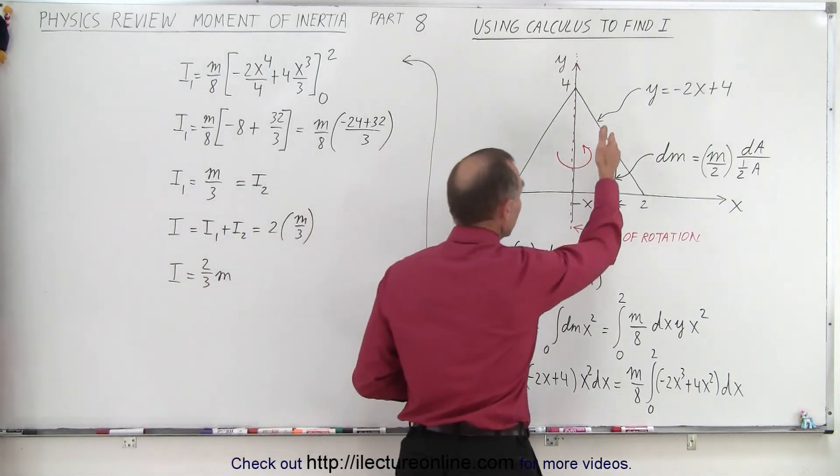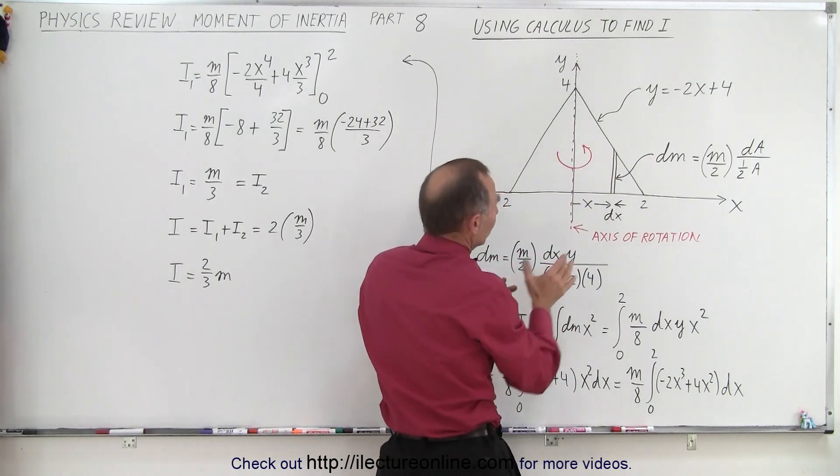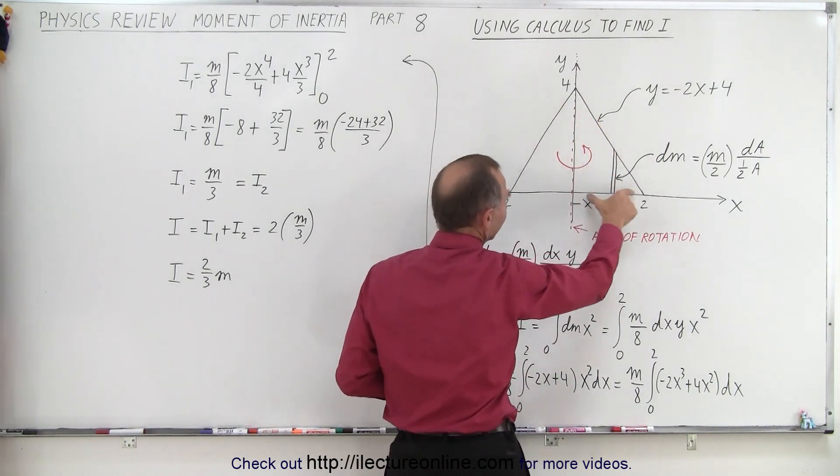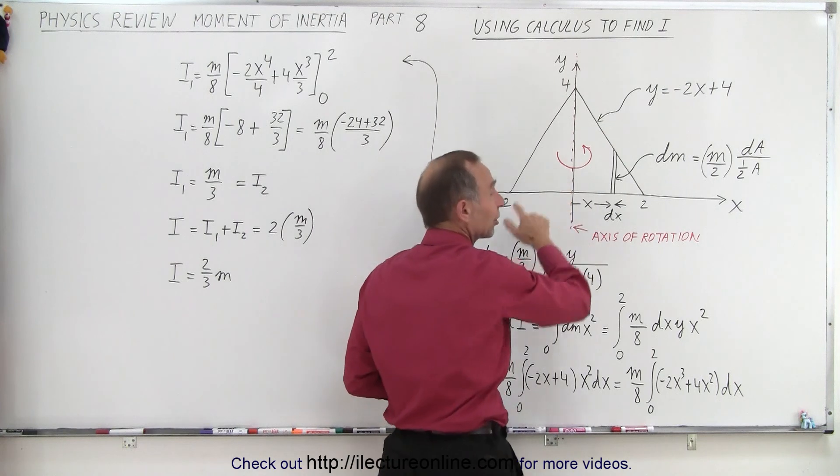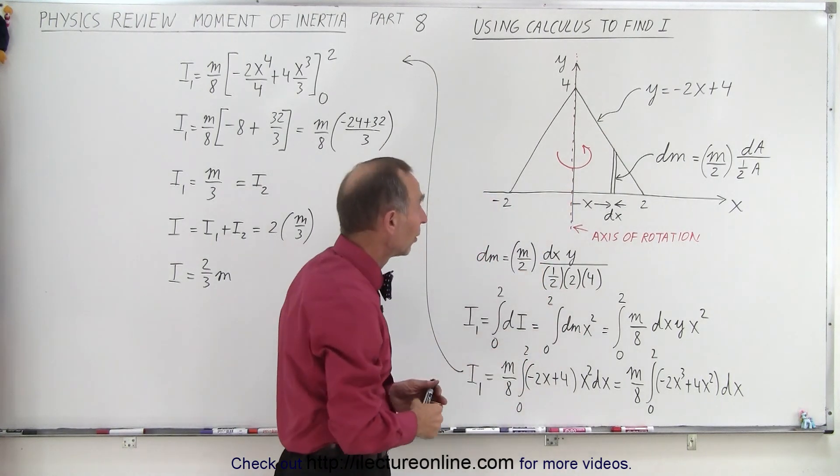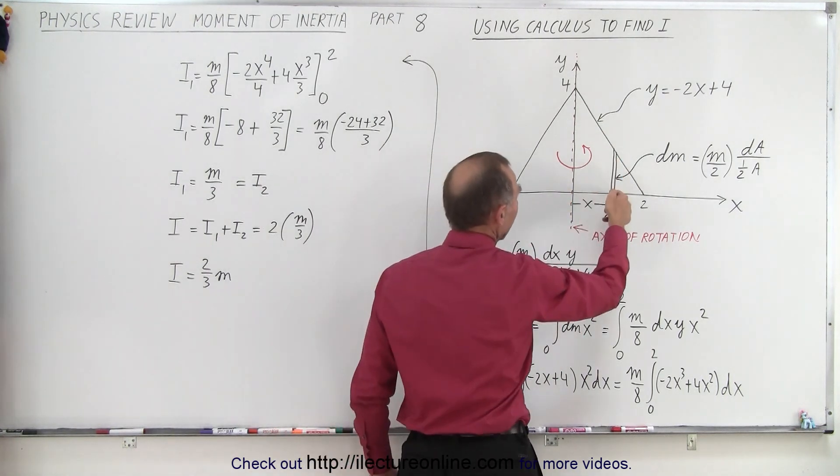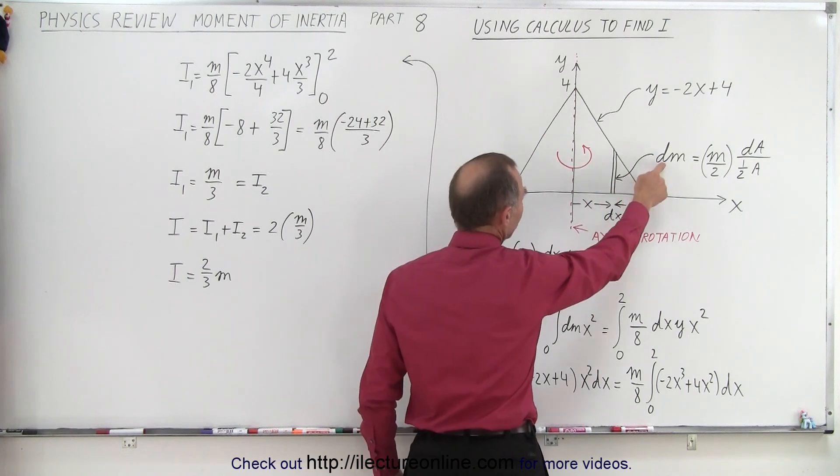Well again, you take a small little strip, and maybe how to approach this, let's just find the moment of inertia of half the triangle, simply double it for the other half, and that makes sense. So we take a little strip here, and we know that that little strip represents a small little mass.